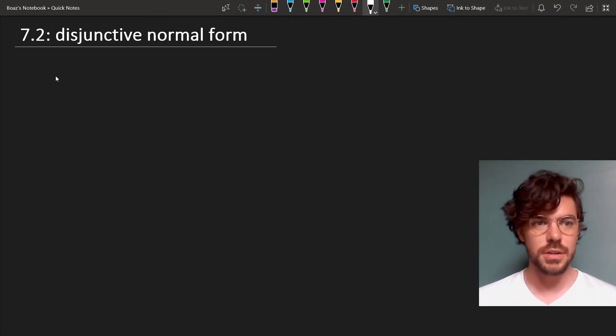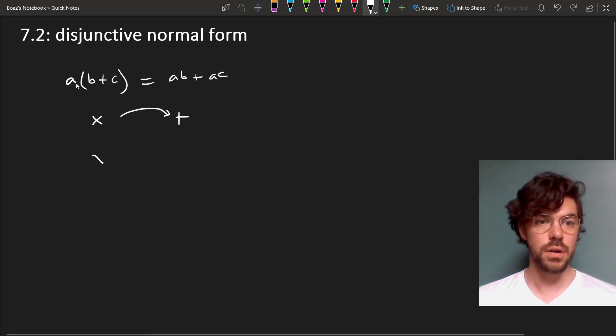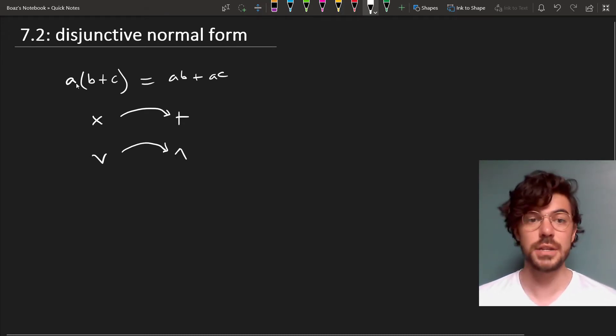In the last video on conjunctive normal form, we saw that in a way analogous to the distribution of multiplication over addition, times distributes over plus, or distributes over and. And unlike times and plus where plus does not distribute over times, and also distributes over or. This allows us to take any sentence and put it in disjunctive normal form or conjunctive normal form.